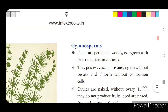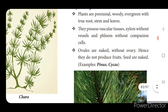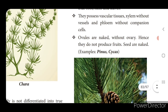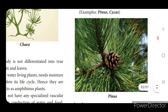Next classification is gymnosperms. Plants are perennial, woody, evergreen with true roots, stem and leaves, and they possess vascular tissues - xylem without vessels and phloem without companion cells. Ovules are naked, without ovary, hence they do not produce fruits. Seeds are naked. Example: Pinus, Cycas.